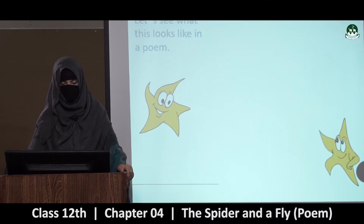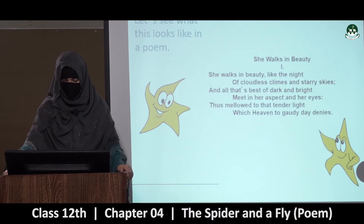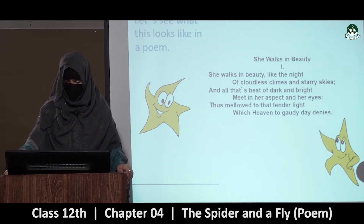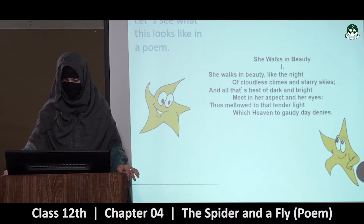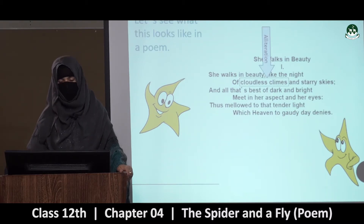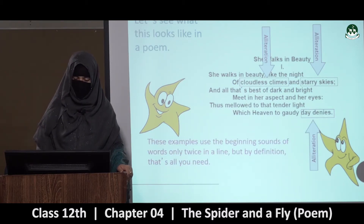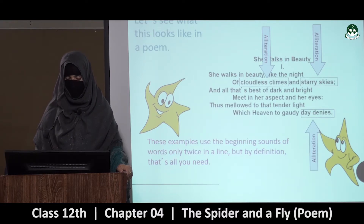They call it tongue twister, okay? Let's see what this looks like in a poem. 'She walks in beauty like the night of cloudless climates and starry skies, and all that's best of dark and bright meet in her aspect and her eyes. Thus mellowed to that tender light which heaven to godly day denies.' See — cloudless climates: alliteration. Starry skies: alliteration. Day denies: alliteration. Repetition of the same initial word. These examples use the beginning sounds of the word only twice in a line, but by definition that's all you need.